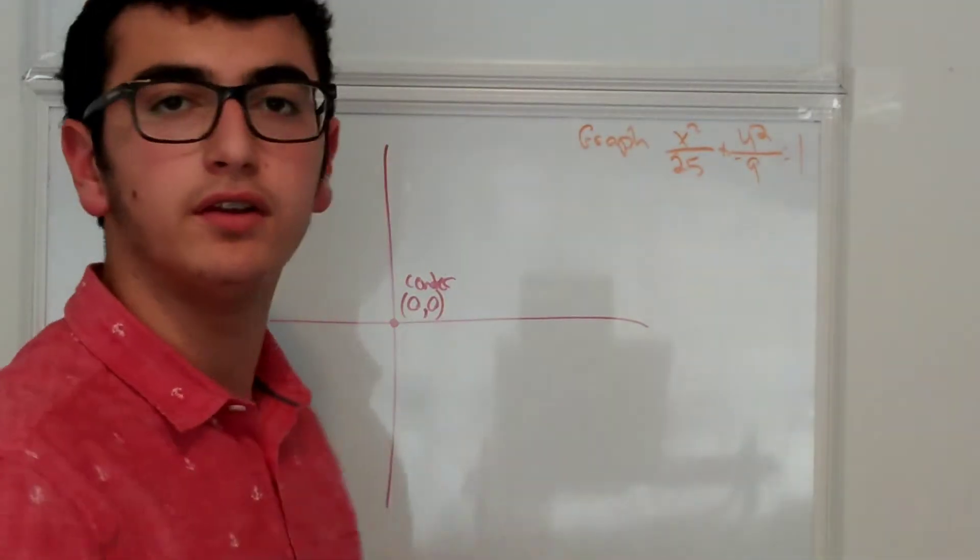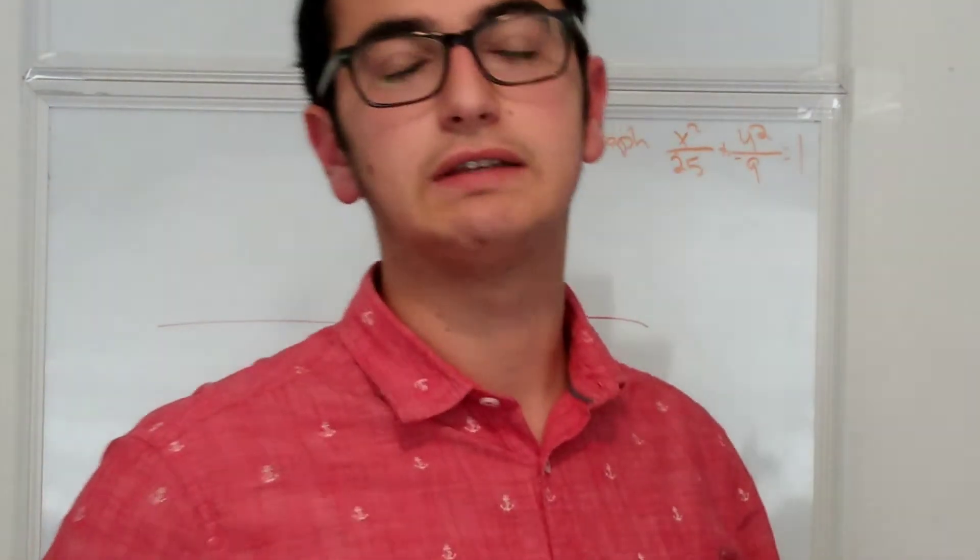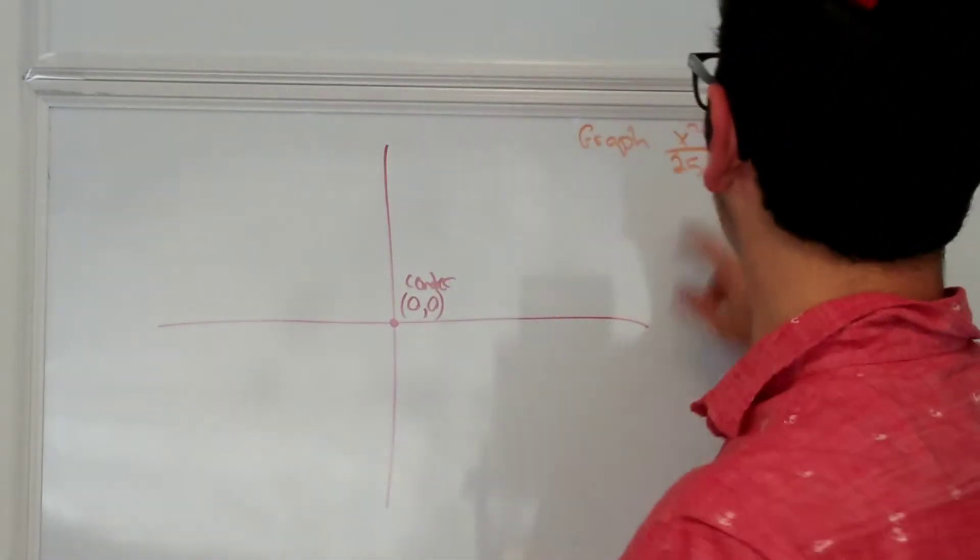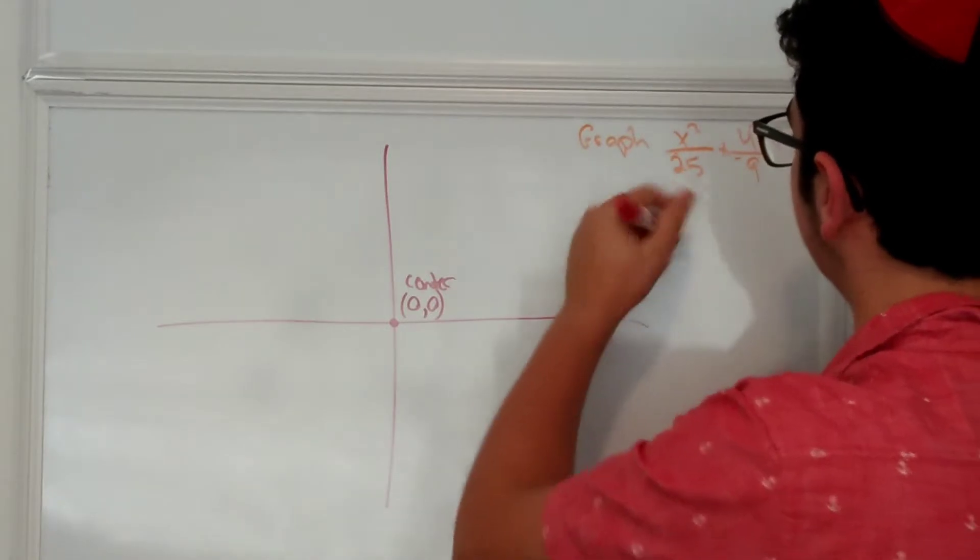So now all we need to do is the foci and vertexes. Vertexi, one might say. Okay, so this is 5 squared and this is 3 squared.